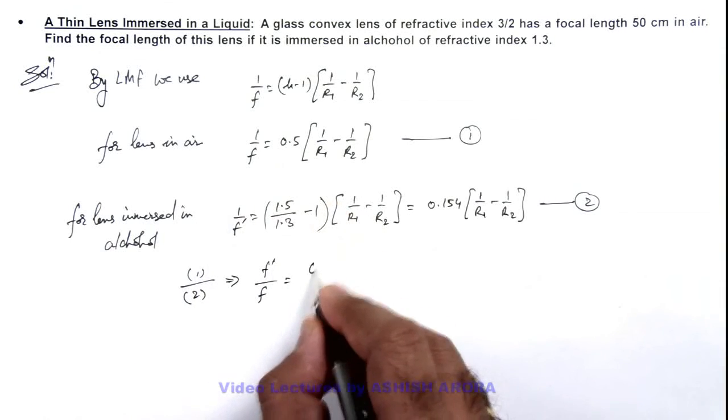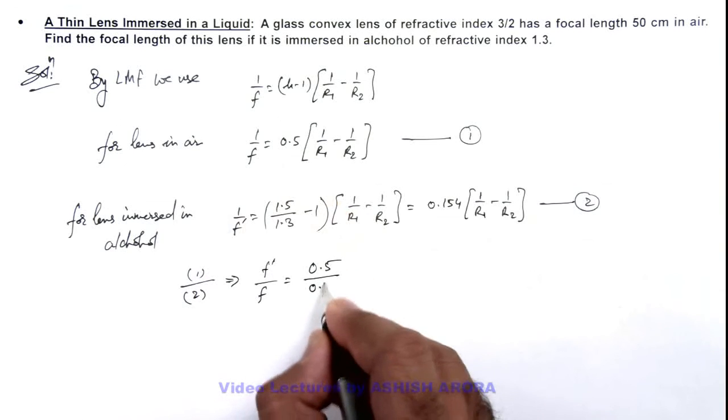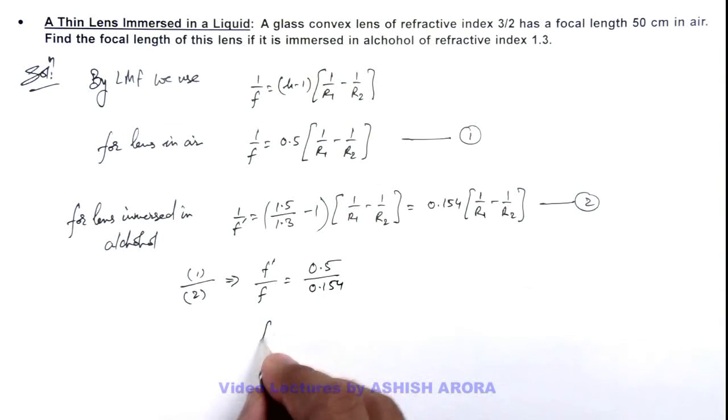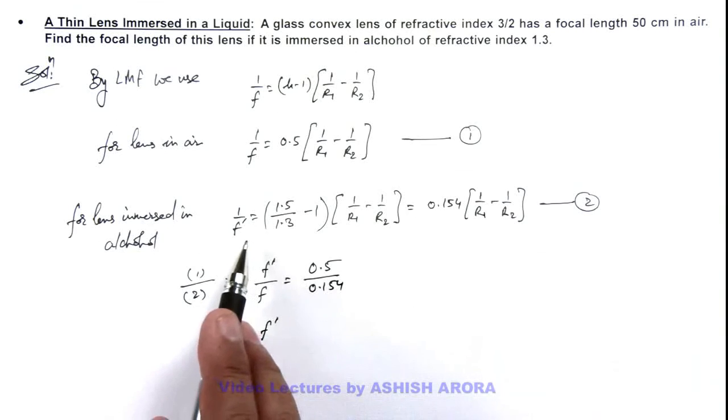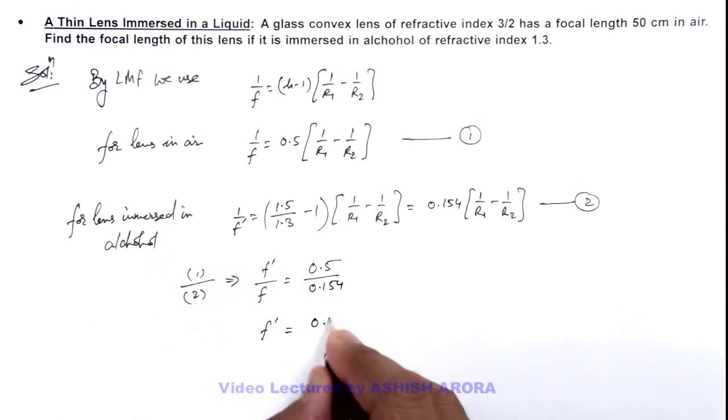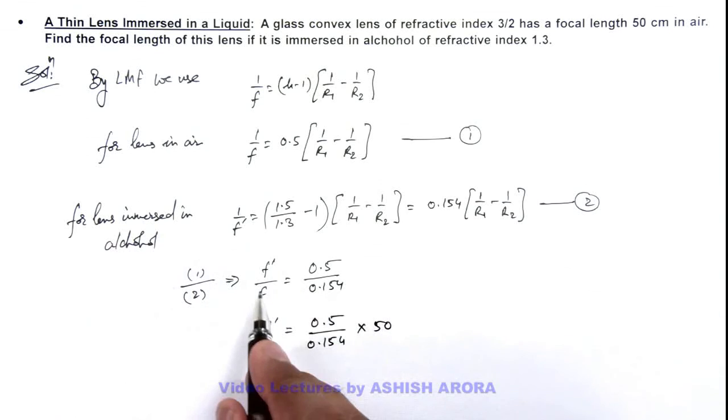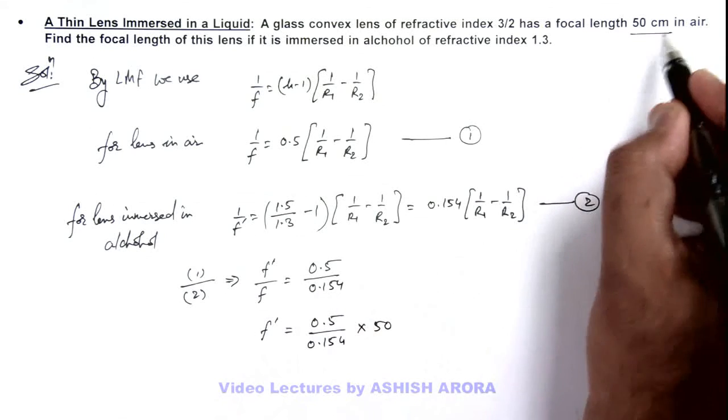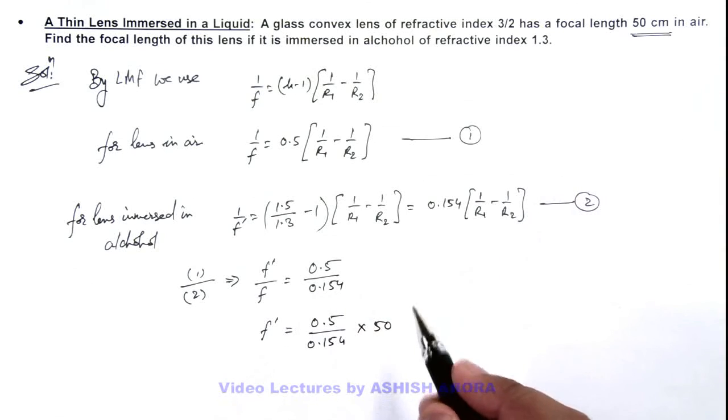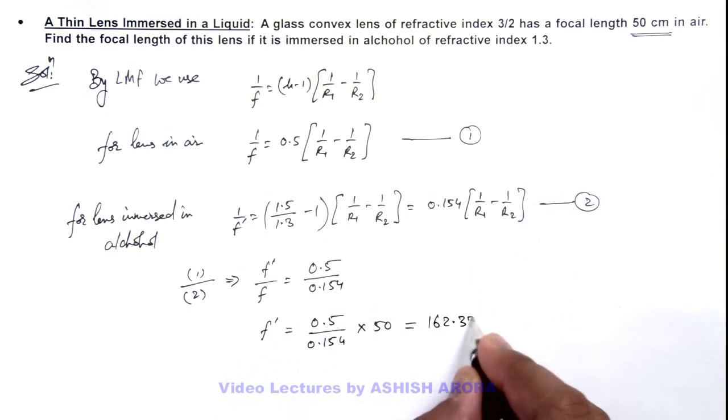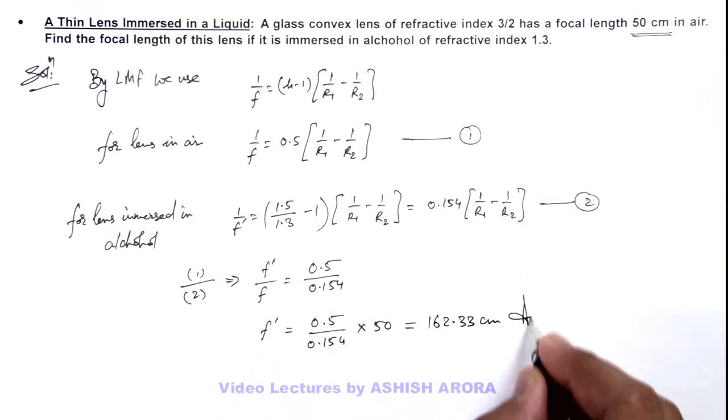So the value of f', that is the focal length of lens immersed in alcohol, can be given as (0.5/0.154) × 50, as it is given that lens has focal length 50 centimeter in air. So this can be written as 162.33 centimeter, that is the result of this problem.